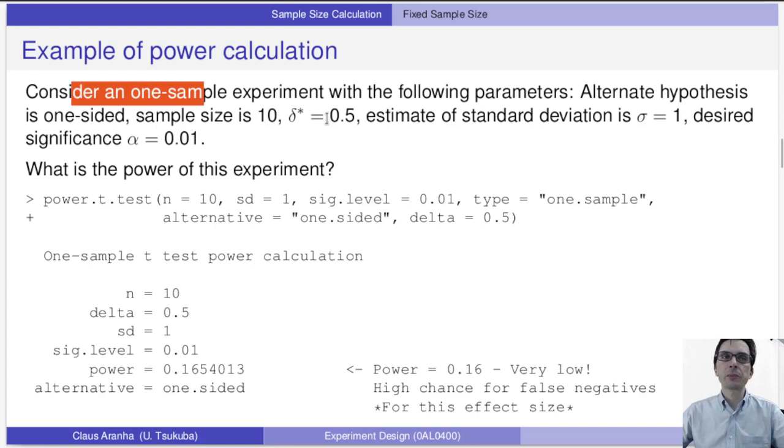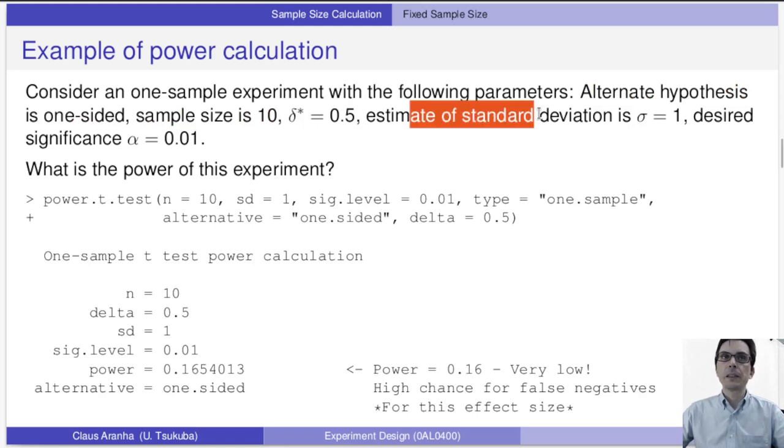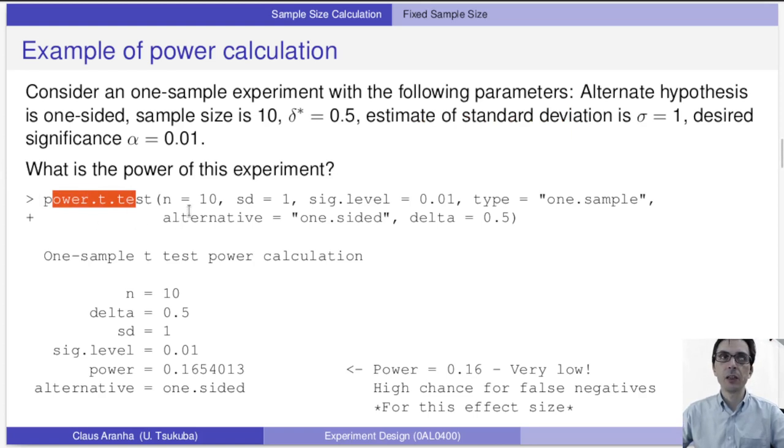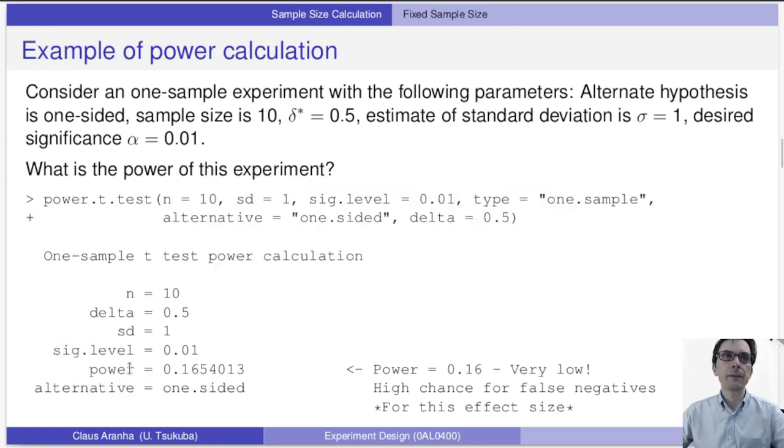Let's give you an example. Consider a one-sample experiment with the following parameters. Alternate hypothesis is one-sided. The sample size is 10, so this is a fixed sample size. The δ* is 0.5, and the estimated standard deviation is σ equal to one. And the α is 0.01. So in this situation, what is the power of this experiment? We can use the power.t.test in R, the power.t.test function, and we give the input that we discussed. And it will give to us a value of the power.